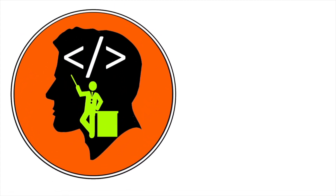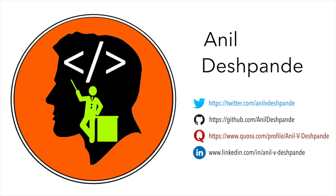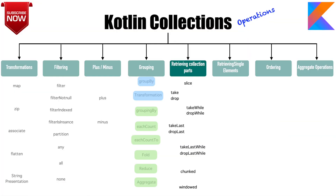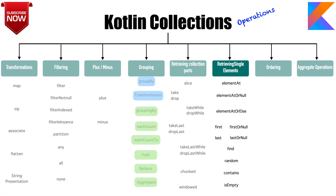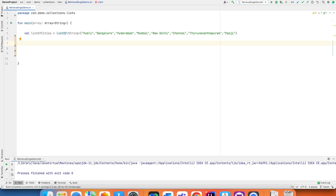Hi folks, co-tutor here, my name is Anil Deshpande. In the previous video we saw a demo of retrieving parts of a collection. In this video we will move on to retrieving single elements from the collection. There are a couple of functions provided out of the box in Kotlin that we will explore. Here I have a list of cities and we will work with this data.